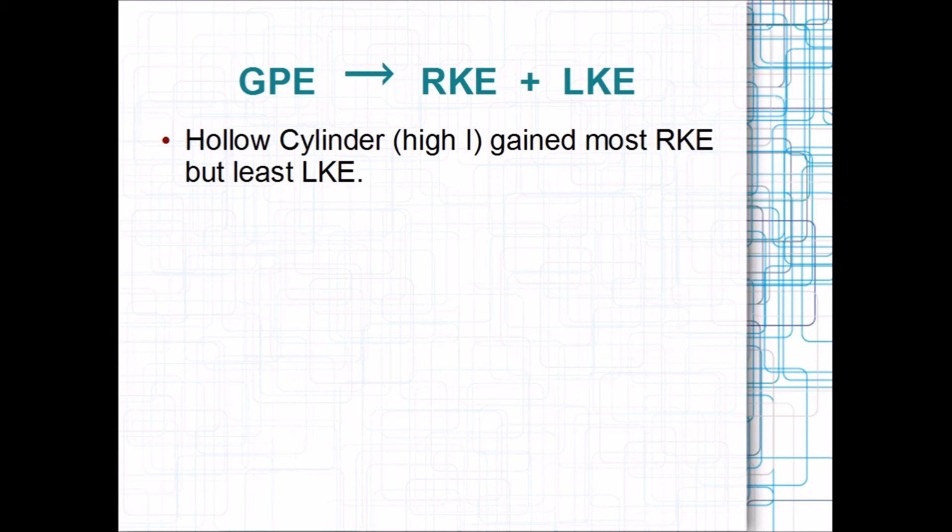gravitational potential energy goes to rotational kinetic energy plus linear kinetic energy. So, that's conservation of energy. That original potential energy we gave the objects is converted into two types of kinetic energy.